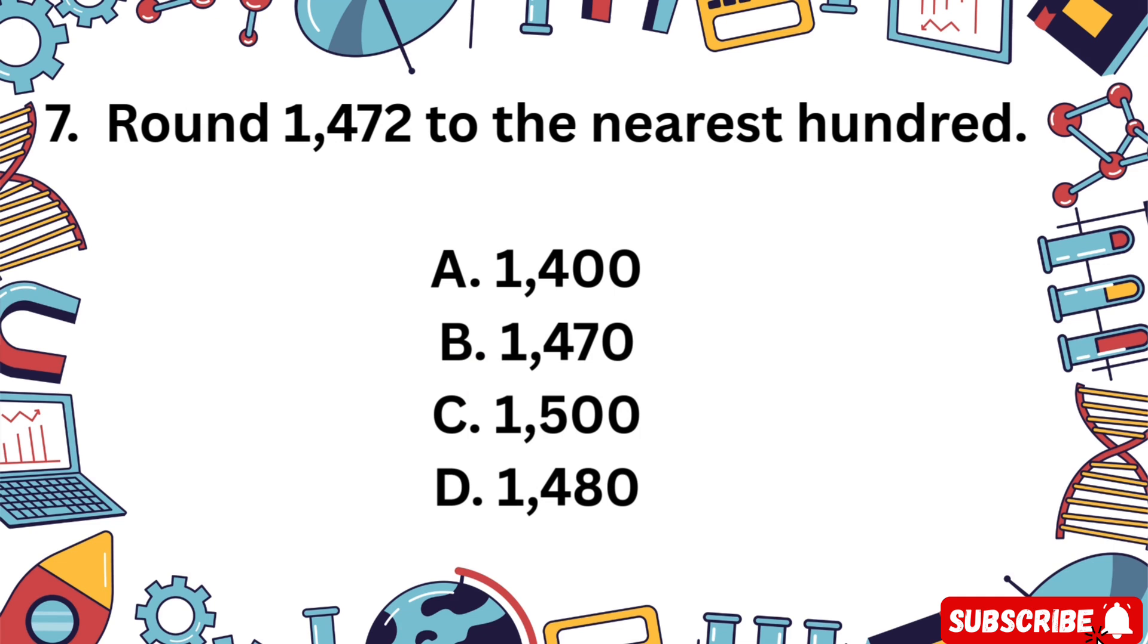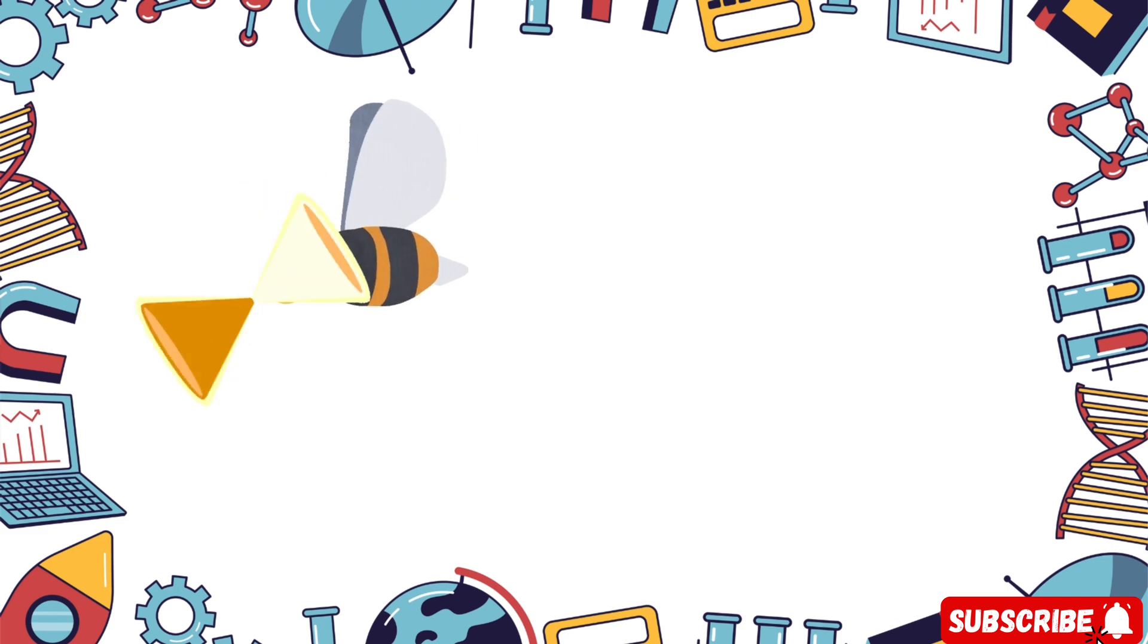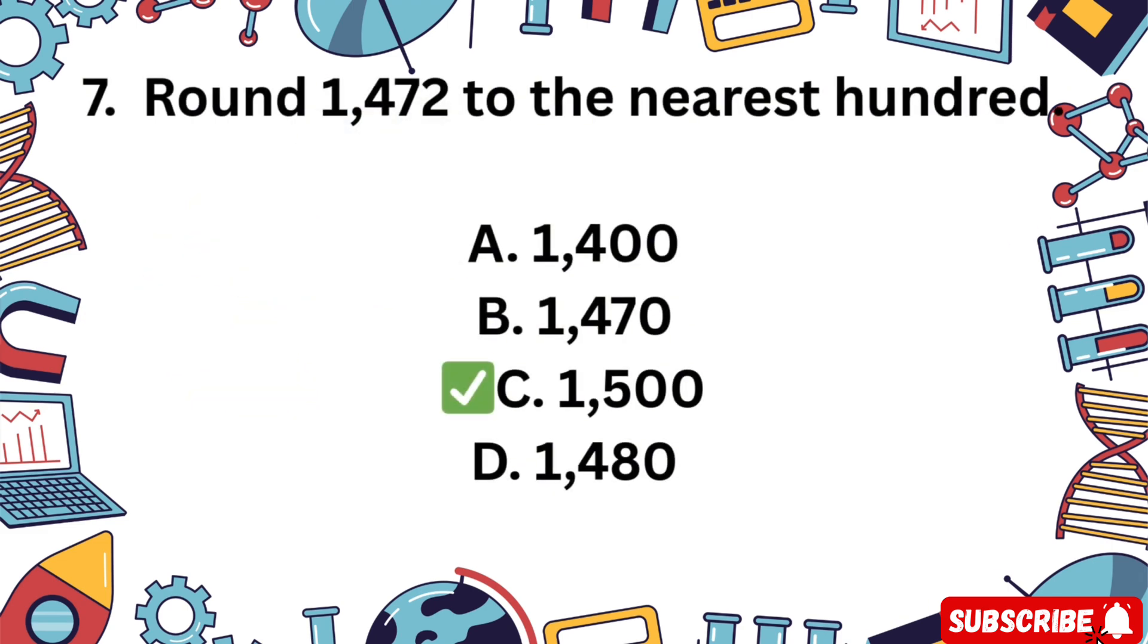Question 7. Round 1472 to the nearest hundred. A 1400, B 1470, C 1500, D 1480. Round it off. 5 seconds. The correct answer is C 1500.